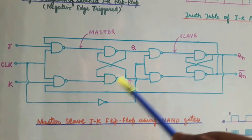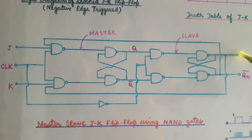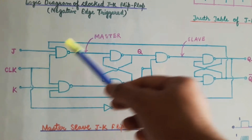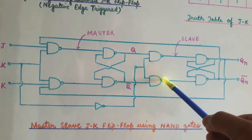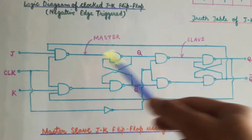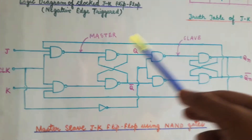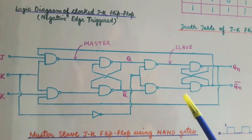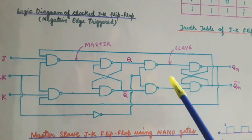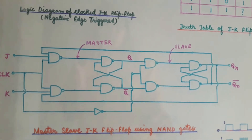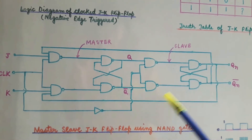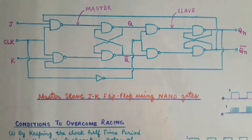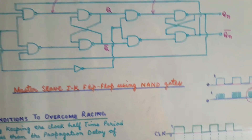Even when the slave output changes, there is feedback from the slave stage to the first stage. But because the clock is low, the output of the master does not change — meaning we have eliminated the effect of feedback and hence eliminated the problem of racing. Instead of the output changing continuously from 0 to 1, the output changes only once in a clock cycle. This is the advantage of this circuit, and this is what is called toggling.